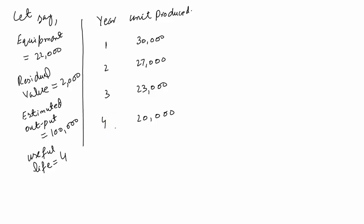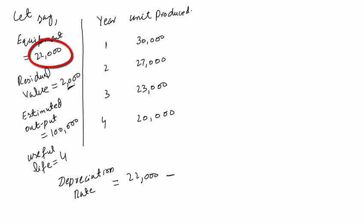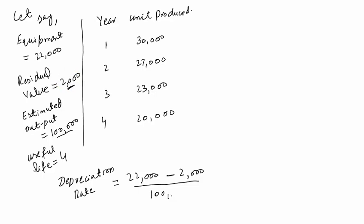We need to calculate the depreciation rate. Depreciation rate is equal to cost of the asset minus residual value, divided by estimated output. We will get a depreciation rate of 0.20 per unit.